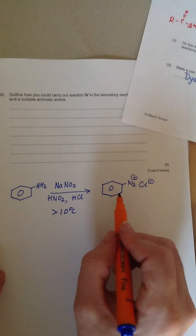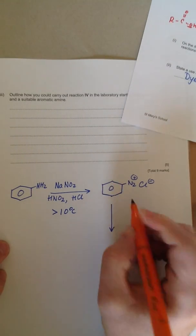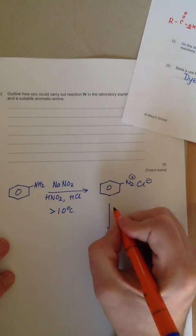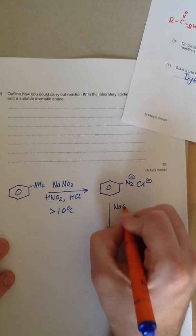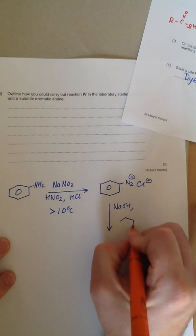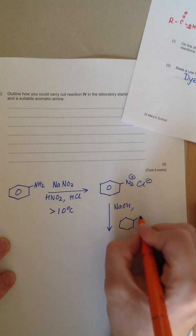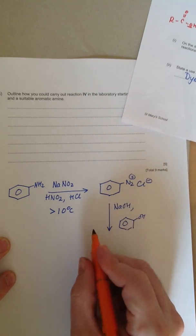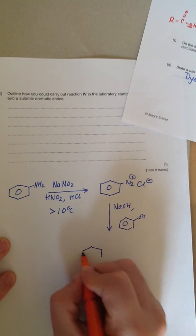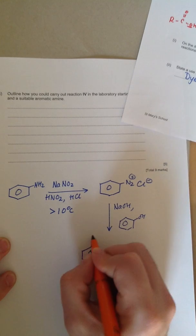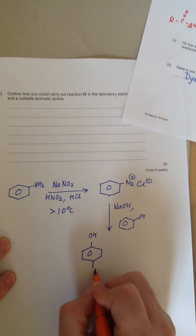And then to convert that molecule to an azo dye, you react it with alkaline phenol. So, we react it with NaOH and phenol. And then the molecule you get is your azo dye, the molecule which is described as number 4 in this scheme.